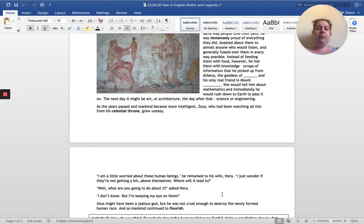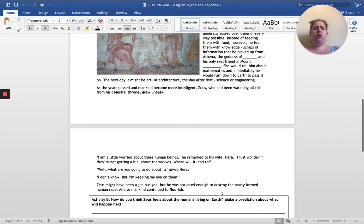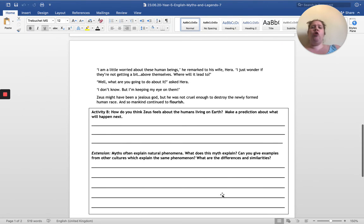She was his only real friend in Mount Olympus. She would tell him about mathematics and immediately he would rush down to earth to pass it on. The next day it might be art or architecture. The day after that, science or engineering. Do you see all these subjects are still subjects we study today? As the years passed and mankind became more intelligent, Zeus, who had been watching all this from his celestial throne, grew uneasy. 'I'm a little worried about these human beings,' he remarked to his wife Hera. 'I just wonder if they're not getting a bit above themselves. Where will it lead to?'